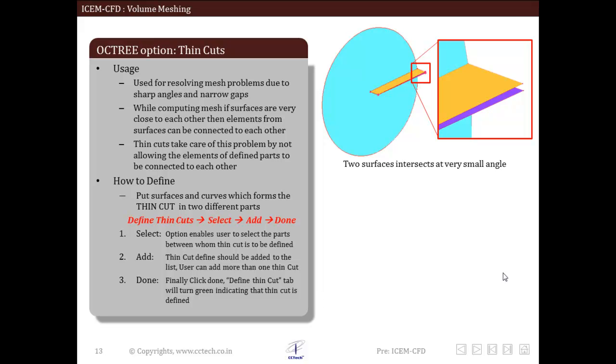Next option is thin cuts. This thin cuts option is very useful and it is used regularly when due to sharp angle surfaces are not meshed properly. User has to specify the surface which forms the sharp angle. ICEM then resolves this issue by not connecting elements from one part to other. For example, consider the geometry in which side one and side three form the sharp angle.